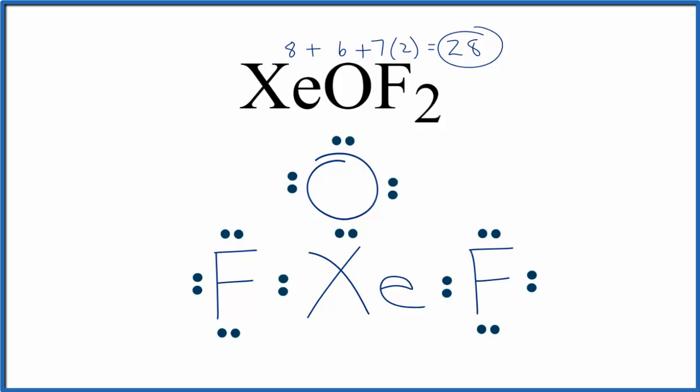For the central xenon, we'll put another pair there. But we've only used 26 valence electrons and we have 28. So we're going to have to take and put another pair of electrons here with the xenon. Xenon can have more than 8 valence electrons. It can have an expanded octet. So it's okay with more than 8.